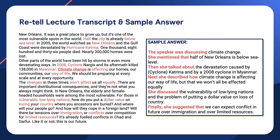Here's the transcript if you want to pause and check your notes against what was said. Let's listen to the sample answer. The speaker was discussing climate change. She mentioned that half of New Orleans is below sea level. Then she talked about the devastation caused by Cyclone Katrina and by a 2008 cyclone in Myanmar. Next, she described how climate change is affecting our way of life, but that we won't all be affected equally. She discussed the vulnerability of low-lying nations and the problem of putting a dollar value on loss of country. Finally, she suggested that we can expect conflict in future over immigration and over limited resources.